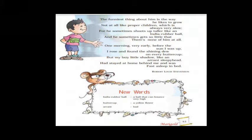Last stanza: 'But my lazy little shadow, like an arrant sleepyhead, had stayed at home behind me and was fast asleep in bed.' Sleepyhead means a person who feels sleepy; arrant means bad. The poet says that in the morning his shadow becomes lazy and bad — it wants to sleep more. When the poet goes out, the shadow remains at home sleeping on the bed. That is the poem by Robert Louis Stevenson.